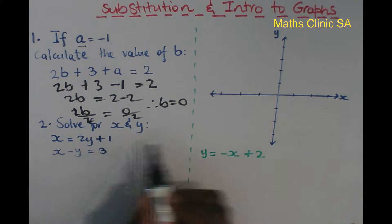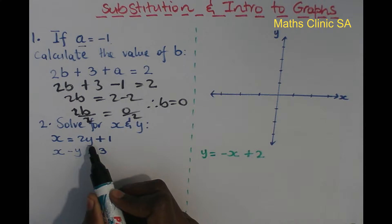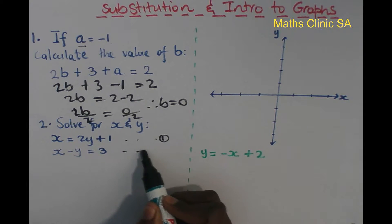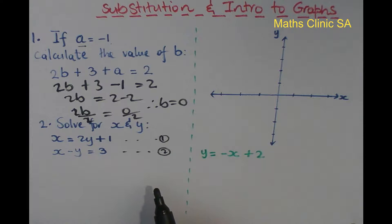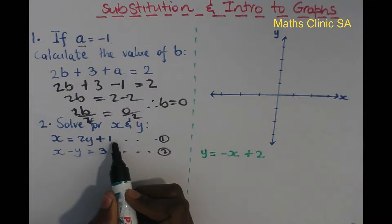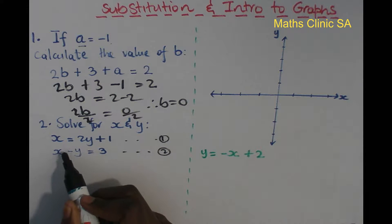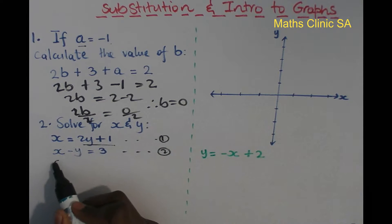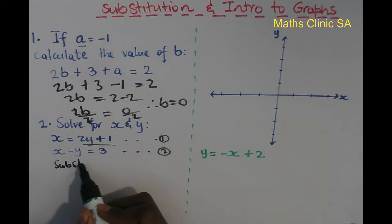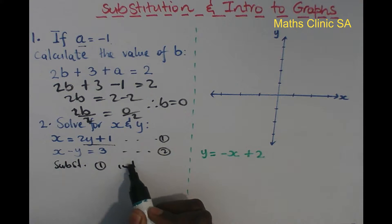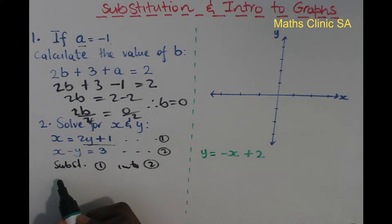Now to solve for x and y: we have x = 2y + 1 and x - y = 3. These are simultaneous equations. We substitute equation 1 into equation 2.